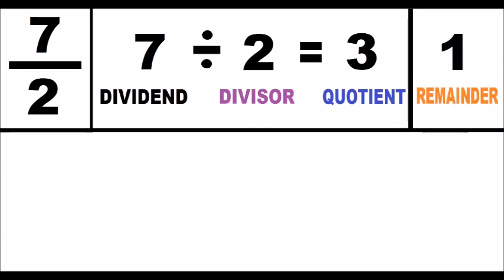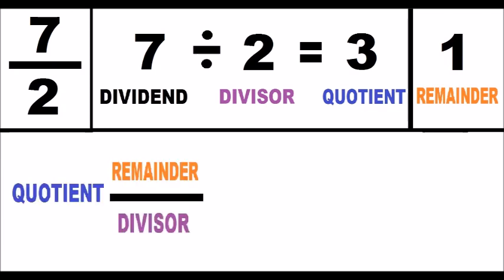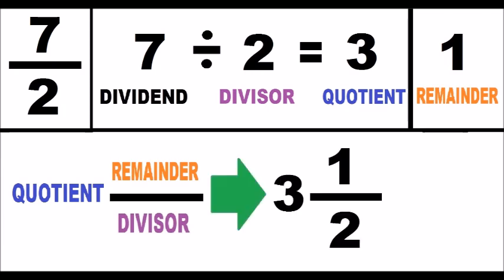Third step, I look at the following diagram and I replicate it, replacing each element with the elements of the previously calculated division. Finally, I get the mixed number that is equivalent to the initial improper fraction. Thanks for watching!